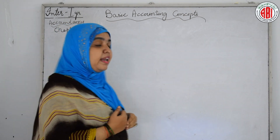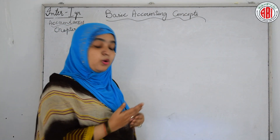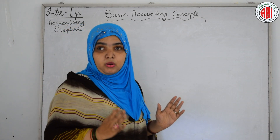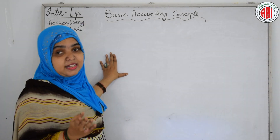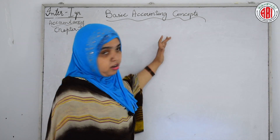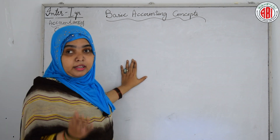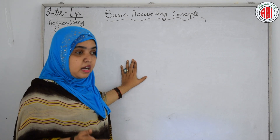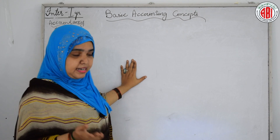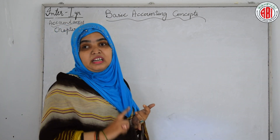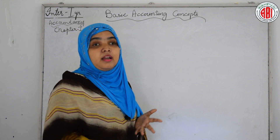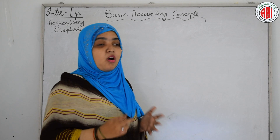Our next basic accounting concept is goodwill. What is goodwill? Goodwill means the good name of the company — goodwill is an asset. Assets are the properties and belongings of the business person. Examples of assets are building, land, furniture, cash, machinery, goodwill, and patents. All these are assets.